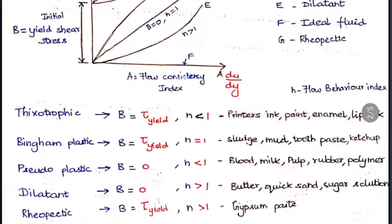When b = 0 and n < 1, it is pseudo-plastic; examples are blood, milk, pulp, rubber, and polymers. When b = 0 and n > 1, it is a dilatant fluid; examples include butter, quicksand, and sugar solution. When b = tau_yield and n > 1, it is rheopectic; an example is gypsum paste.